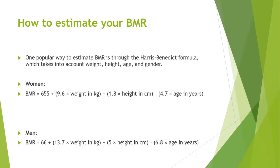The Harris-Benedict equation is an abbreviated method based on sex (gender), age, height, and weight, and represents basal energy expenditure — though it has been reported to be more representative of resting energy expenditure. For women: BMR = 655 + (9.6 × weight in kg) + (1.8 × height in cm) − (4.7 × age in years). For men: BMR = 66 + (13.7 × weight in kg) + (5 × height in cm) − (6.8 × age in years).